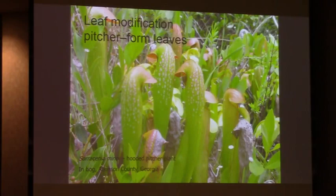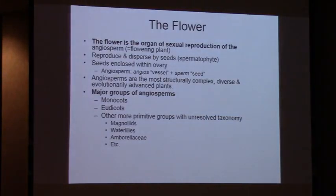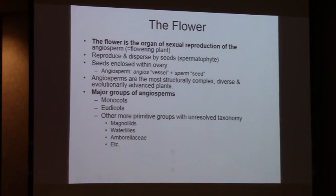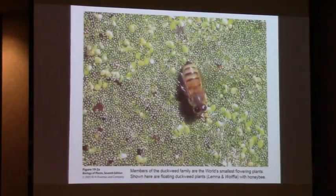Leaf modifications include spines - we all love pitcher plants with their pitcher-formed leaves. Now, the most important organ in terms of plant identification is the flower - certainly when we're going to angiosperms. The major groups of flowering plants are the monocots, the eudicots, and then 3% that don't fit into those groups - magnolias, water lilies, and so forth. How large and how small are flowering plants?